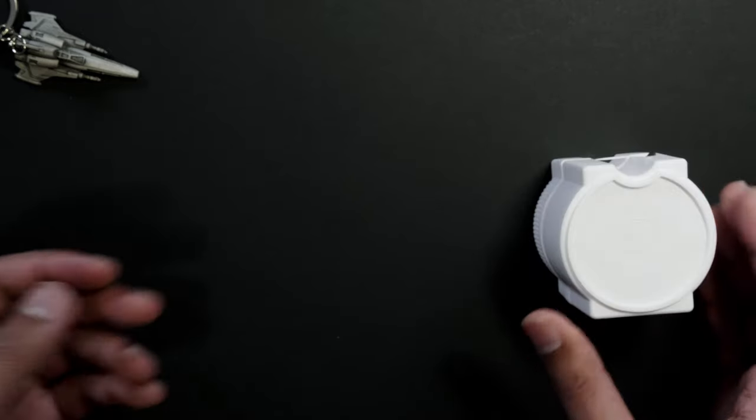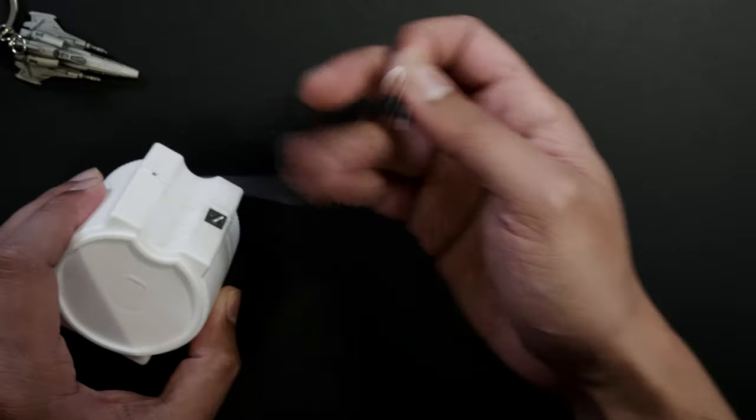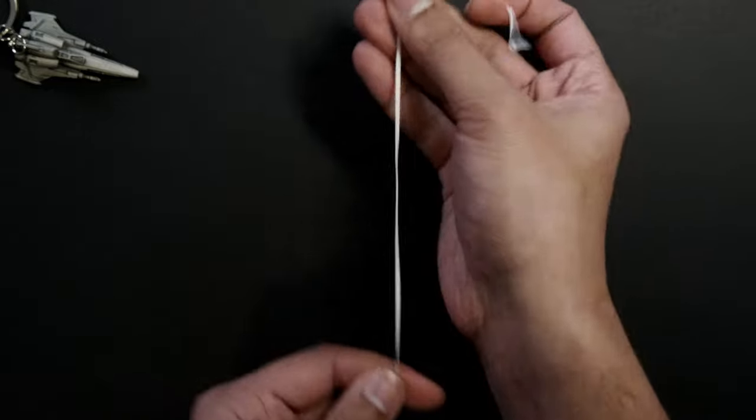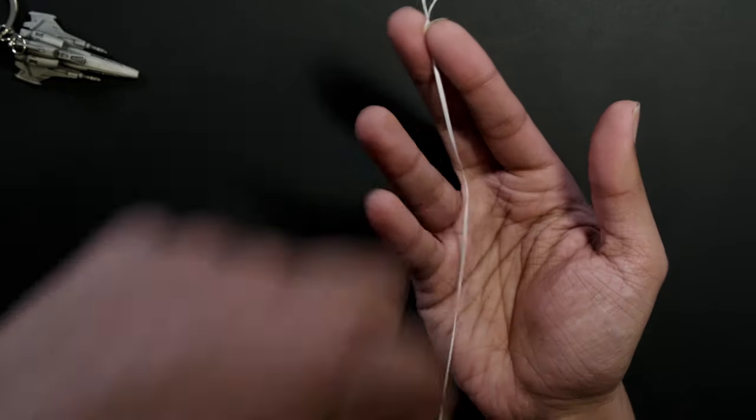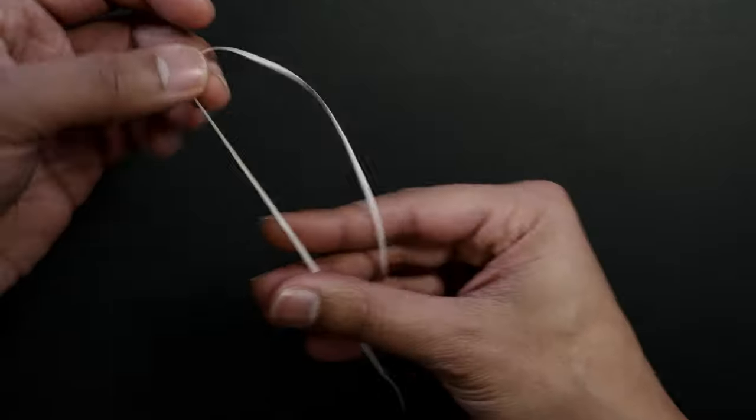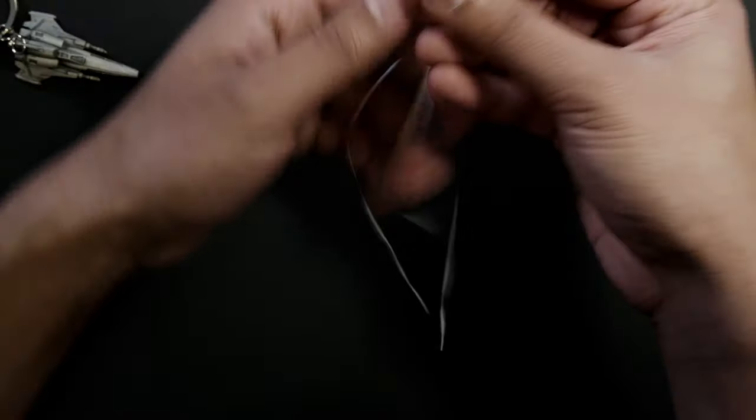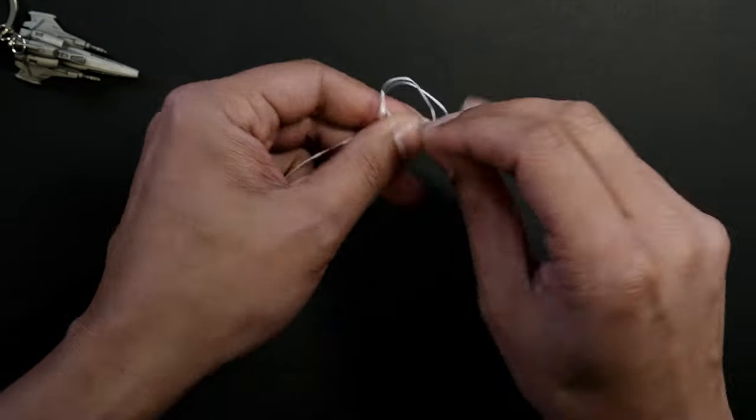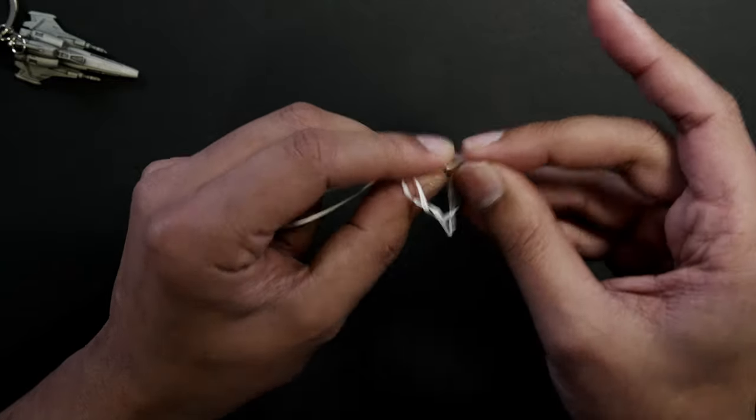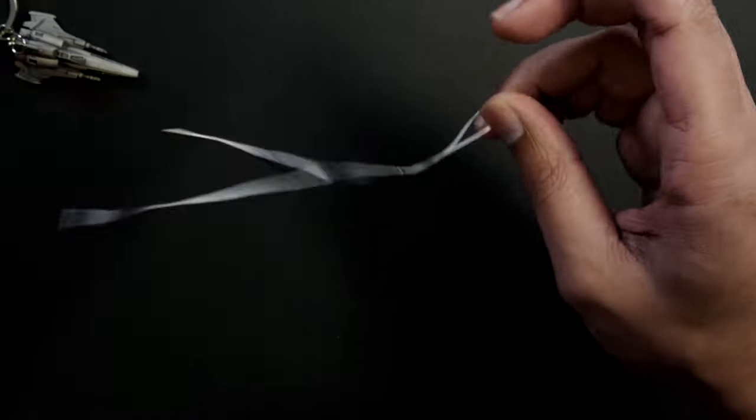So you're going to need some floss. So we're going to grab some floss, about 15 centimeters or so, kind of two palms width. The first ligature is going to be pretty simple. You're going to put it down and you're going to tie a knot in it.